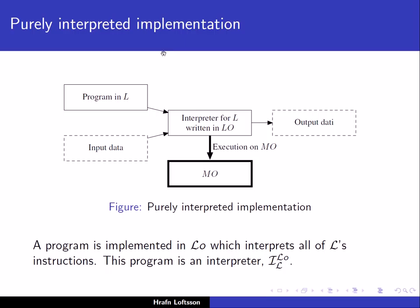If we first look at the purely interpreted implementation, this figure shows really the face of this purely interpreted implementation. We have a program in the source language — the program in L — and we also have input data. The input data is what this program written in L takes as input. We then write an interpreter for L in language L-O, execute this interpreter on the abstract machine M-O, and the result of this interpretation is some output.